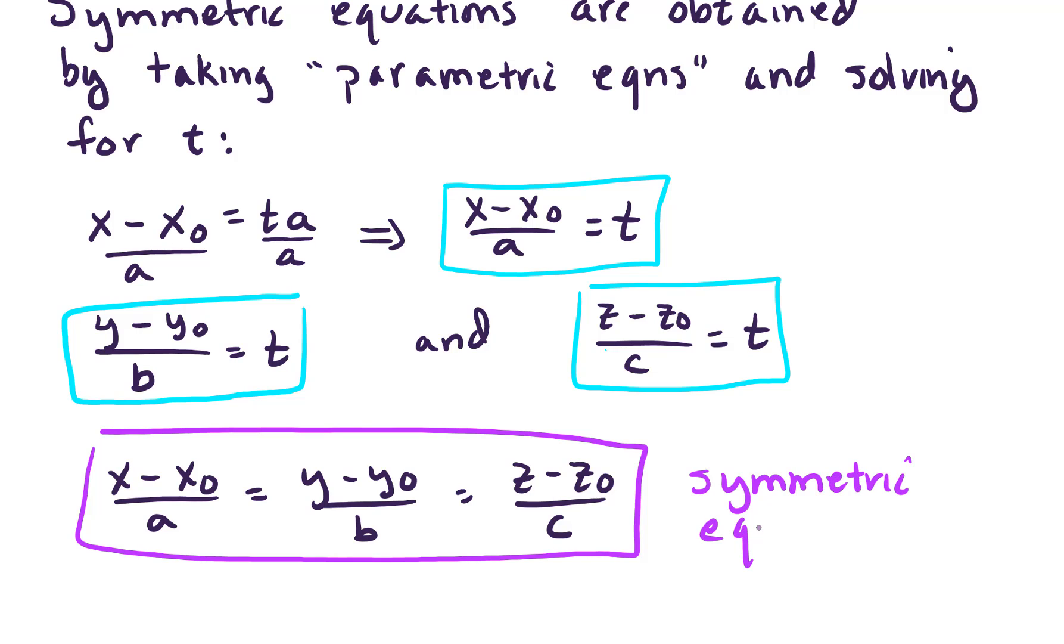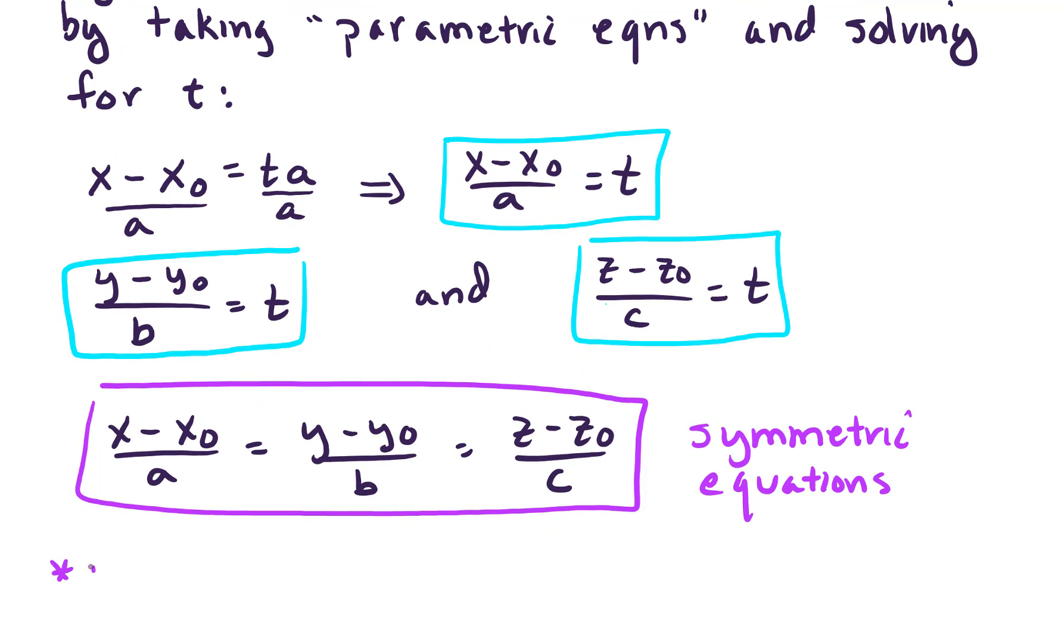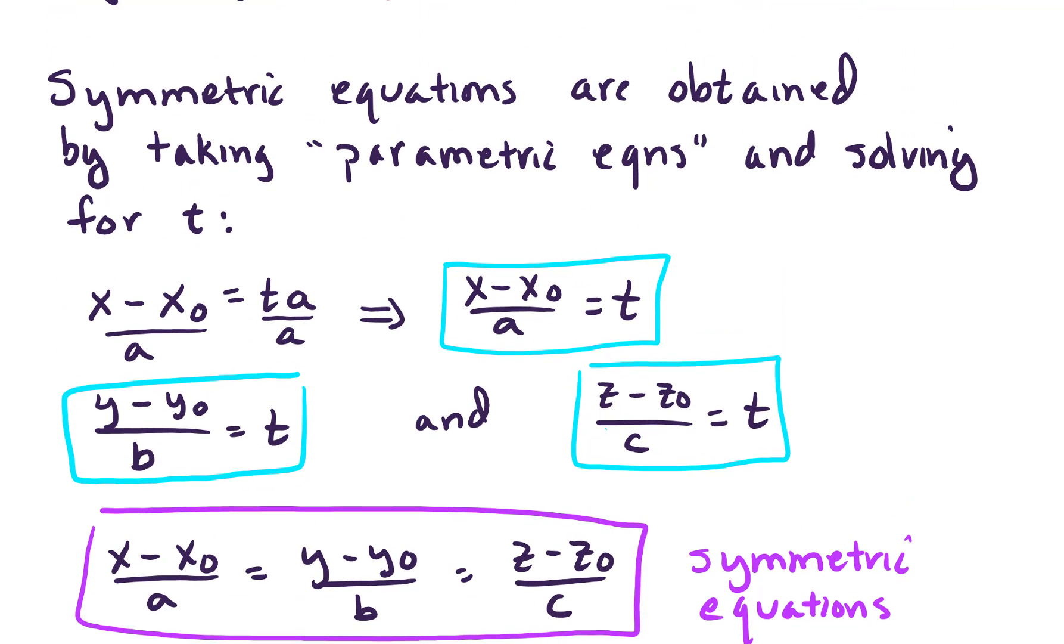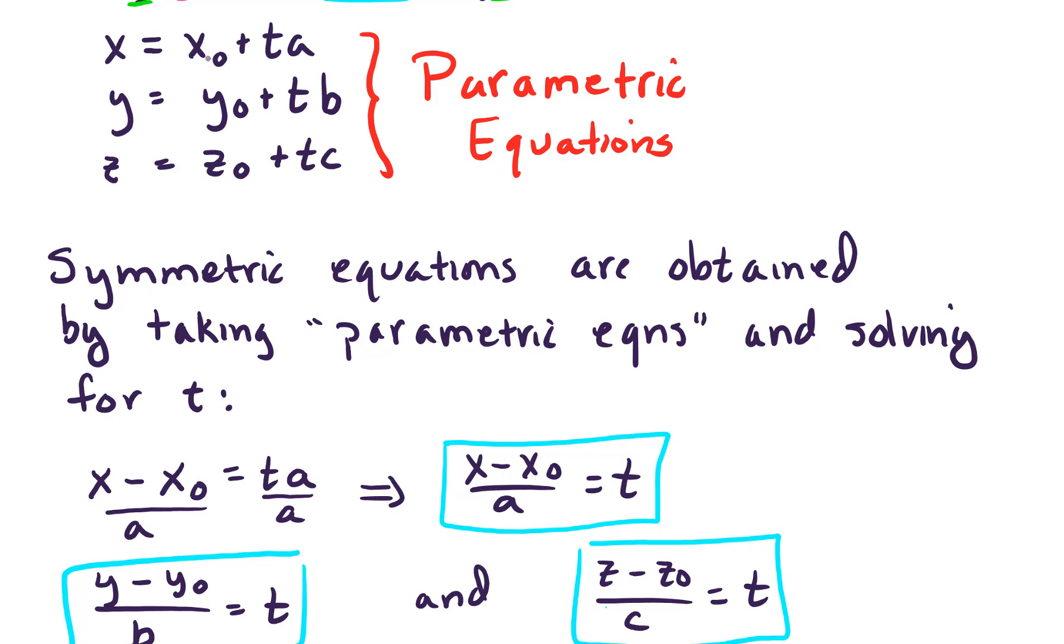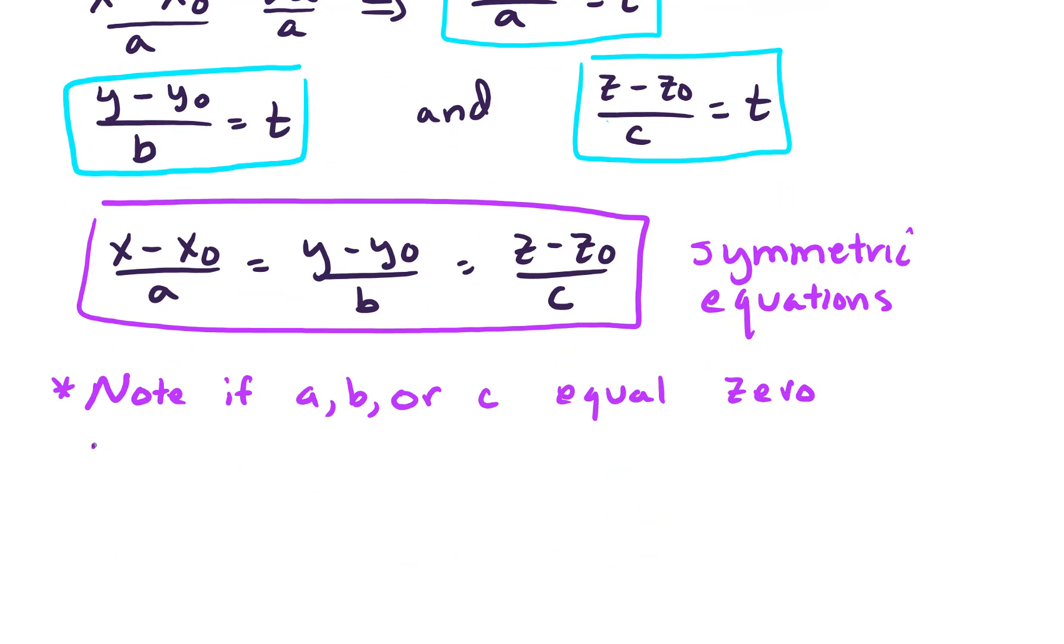I'm just going to make a note here that if A, B, or C equals 0, what would happen? Up above here, if, for example, A were equal to 0, then you just have X equals X-naught, and that gives you some sort of plane. And so you have something like X equals X-naught, right, if A equals 0. And you would set that equation aside.